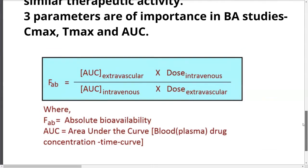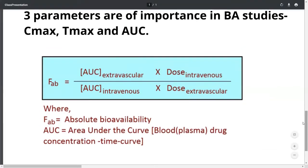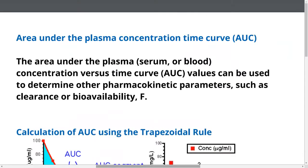Here is the formula for calculation of absolute bioavailability of drug, where F equals AUC extravascular by AUC intravenous. If the doses are different, you need to multiply by the doses: AUC extravascular times dose intravenous, divided by AUC intravenous times dose extravascular.